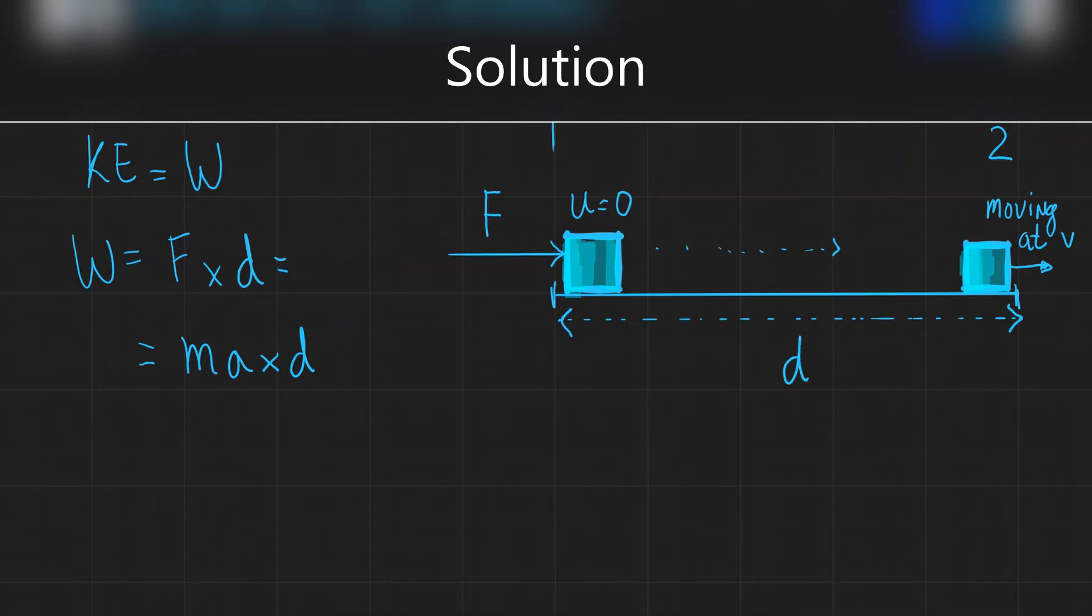So if work done is equal to F times d, it's also equal to m times a times d. And rather than work done, because kinetic energy is equal to work done, I'm just going to say that the kinetic energy is equal to m times a times d. Now let's see whether we can find an expression for the acceleration multiplied by the distance.